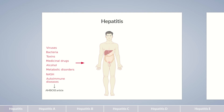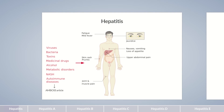In acute hepatitis, initial symptoms are mainly nonspecific, such as fatigue and fever, skin rash, joint and muscle pain, nausea, vomiting, and loss of appetite, as well as upper abdominal pain. The more the inflammation restricts liver function, the more specific the symptoms become. Impaired breakdown of erythrocytes in the liver results in jaundice, dark urine, and pale stools.